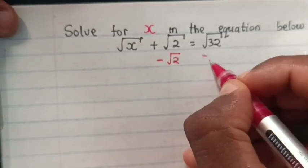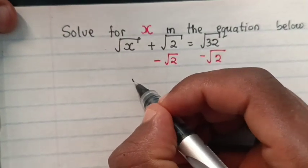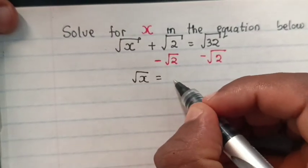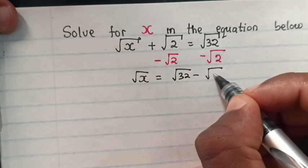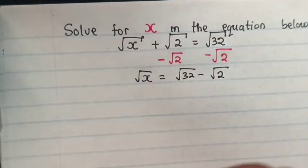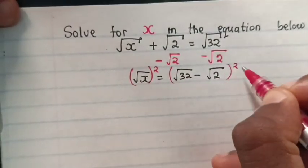So we minus square root of 2 from both sides. So it will be square root of x is equal to square root of 32 minus square root of 2. Then we square both sides.